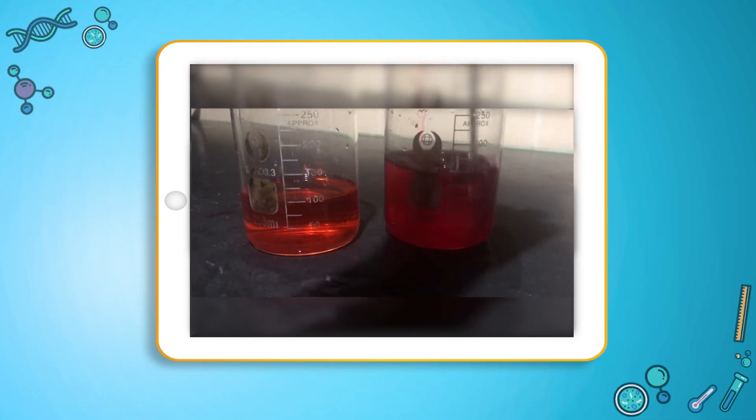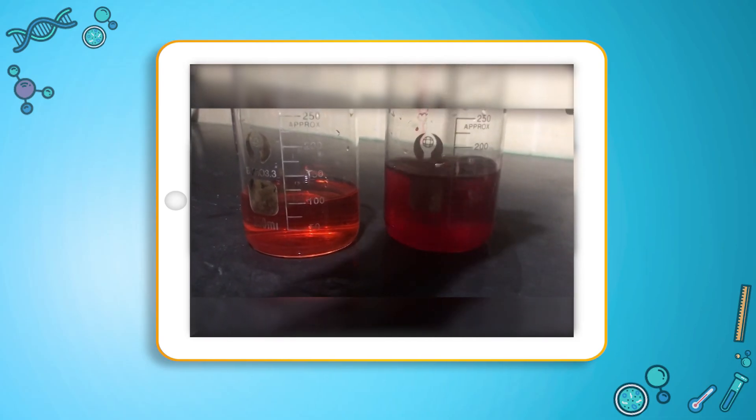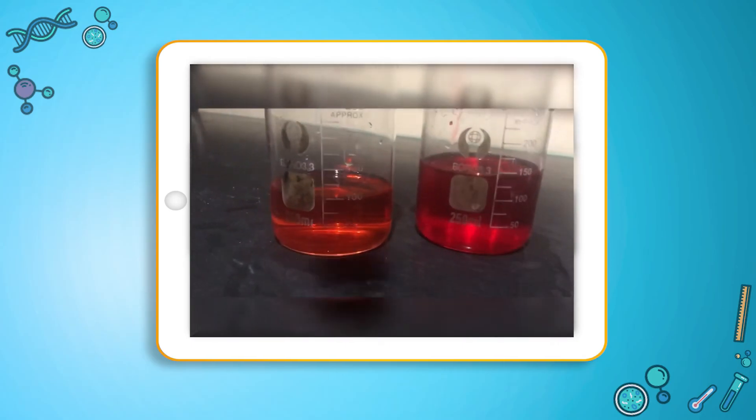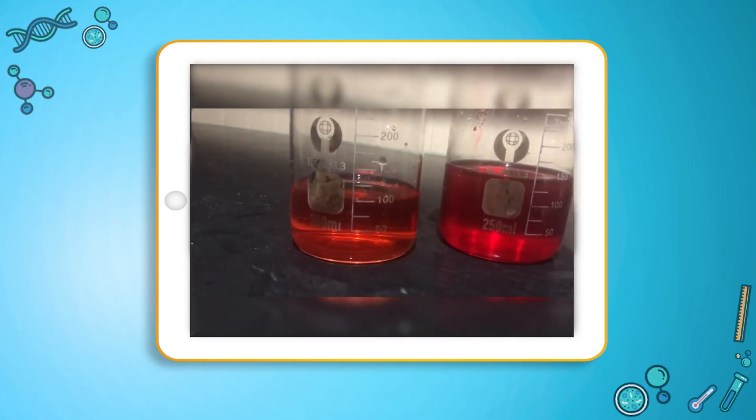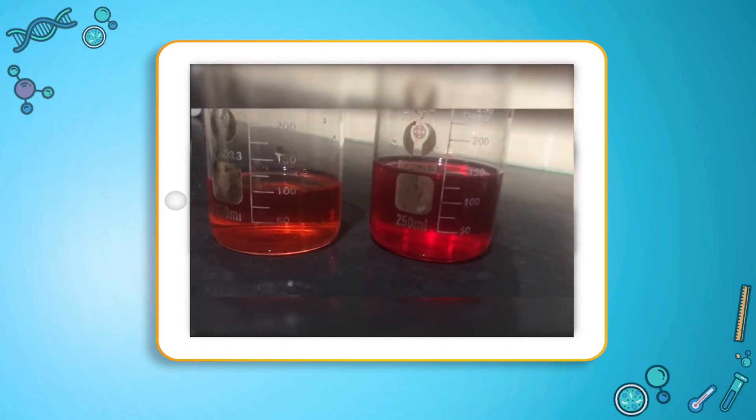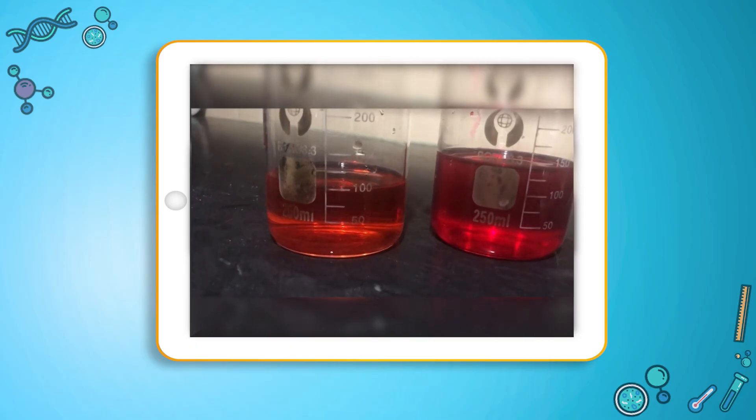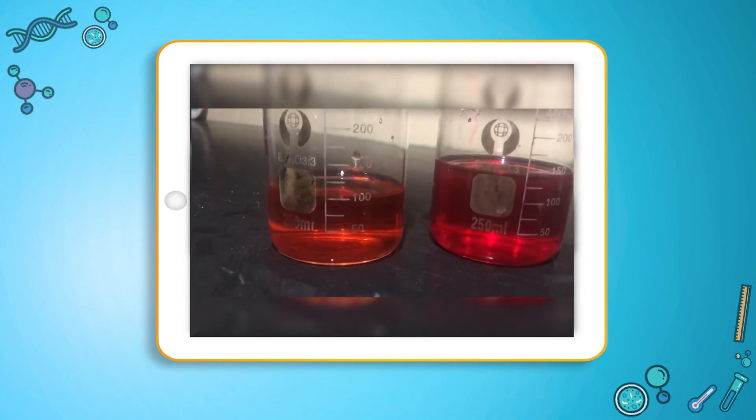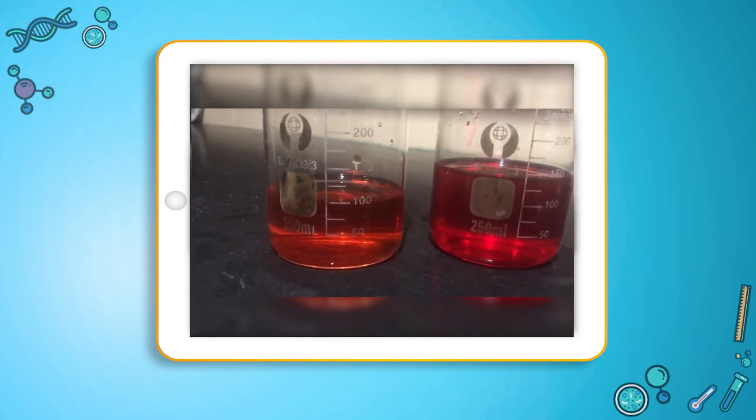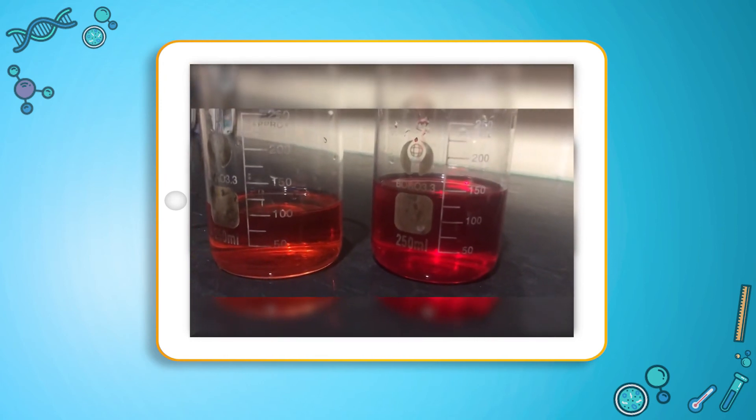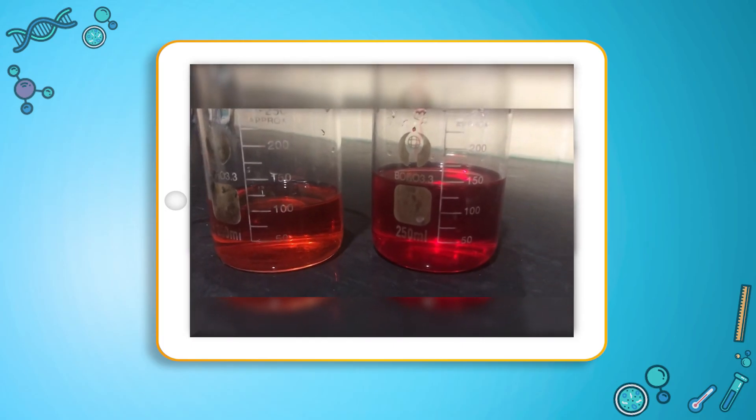So as you can see that the color of the two solutions are different. In the first one, the solution is light red in color and the second one is dark red which shows us that the first one is a dilute or a weak solution because it has less amount of solute in it and the second one is a concentrated solution because it has more amount of solute in it.